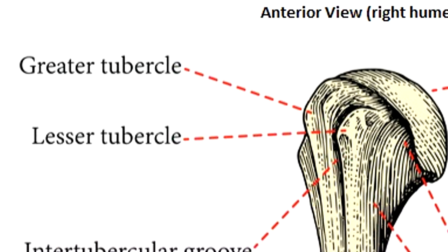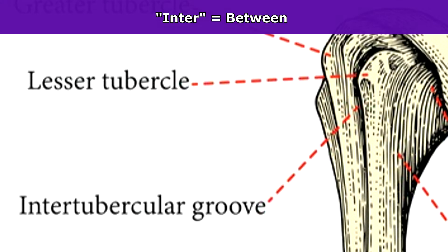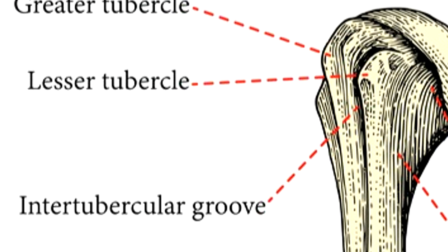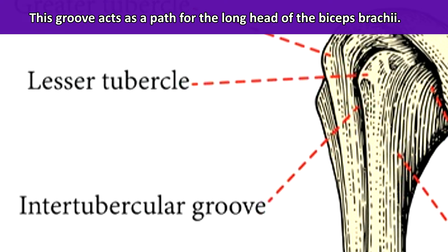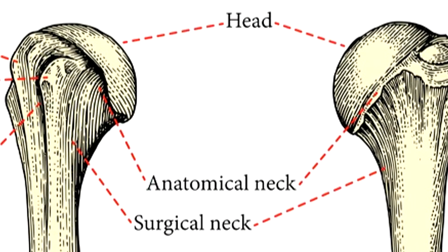Anytime you have two hills side by side, you're going to have a valley in between them — and that's what the intertubercular groove is. It's a valley between the greater and lesser tubercles that extends down the shaft of the humerus. The prefix inter means between, and since you only have two tubercles on the humerus, this groove is found between those two tubercles. It acts as a path for the long head of the biceps brachii.